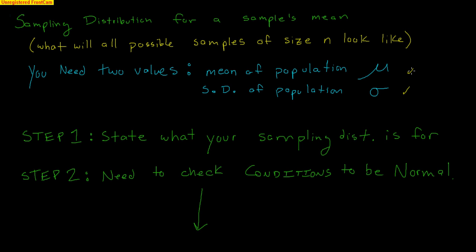If we take a sample of, let's say, 15 high school boys, we might not necessarily get that exact same mean. We might get something a little bit higher or a little bit lower, and that's the idea of creating a sampling distribution. A sampling distribution will simply show what all possible samples of size 15 would look like.